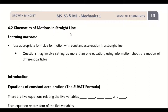Welcome to the third lesson for M1 Topic 2: Kinematics of Motions in a Straight Line. In today's session, we are going to look at how to use appropriate formulas for motion with constant acceleration in a straight line. The key point here is the words 'constant acceleration.' The formulas we will look at today are known as the SUVAT formulas, and there are altogether five formulas we will be discussing.